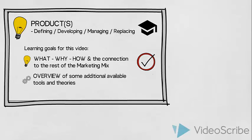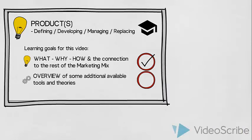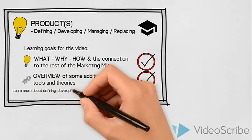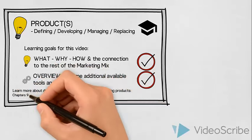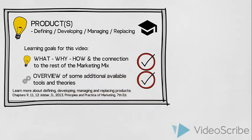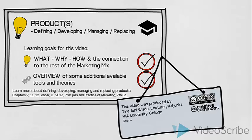We have now established an understanding of what, why and how to define a product. And lastly, we have presented an overview of some additional tools and theories available to us when defining, developing, managing or replacing products. To learn more about how to use the different tools and theories introduced in this video, I recommend that you read Chapters 9, 11 and 12 in David Jobber and Fiona Innes Chadwick's Principle and Practice of Marketing 7th Edition. My name is Tina Wade. Thank you for watching.